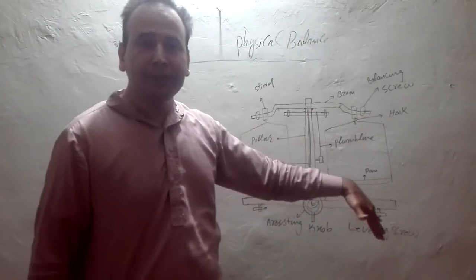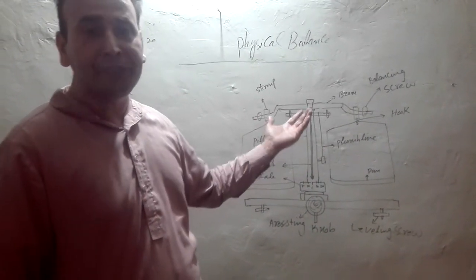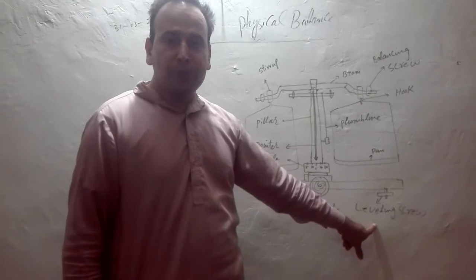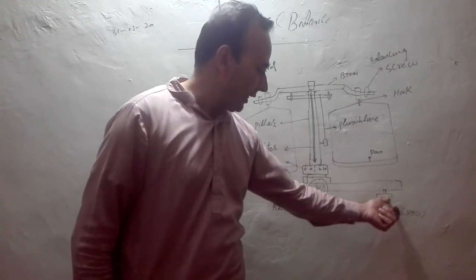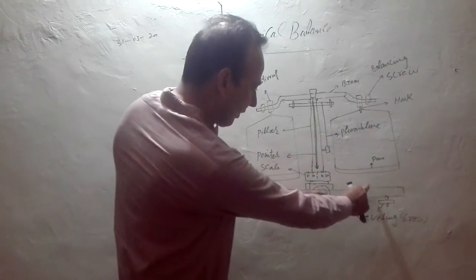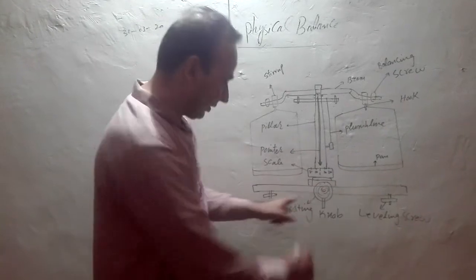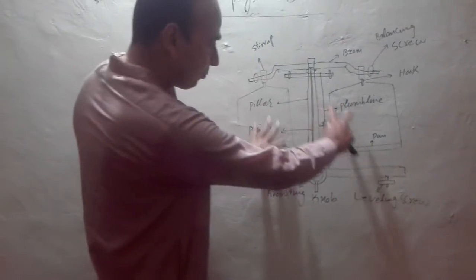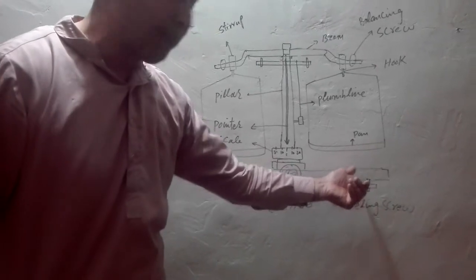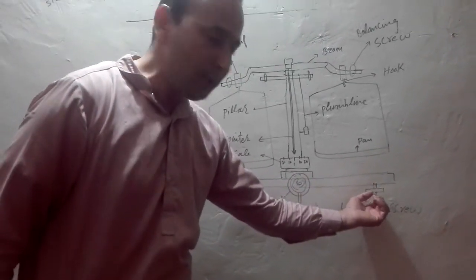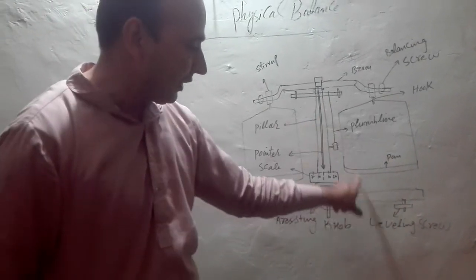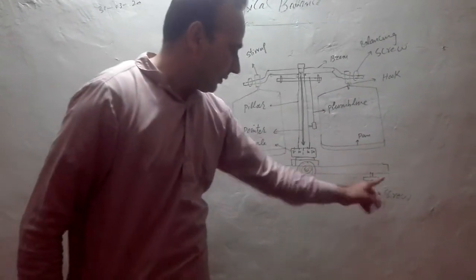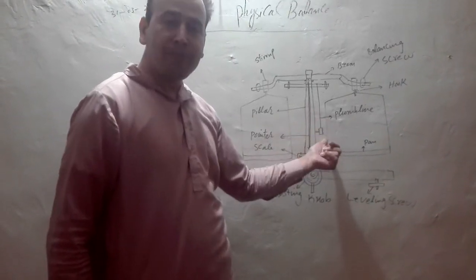Now let me explain the complete working — how we perform the practical and find the mass of an unknown object. First of all, we have to look at and adjust the leveling screws. These pans are on what is known as the platform of the physical balance. We have to balance the platform with the help of a plumb line by rotating the leveling screws.